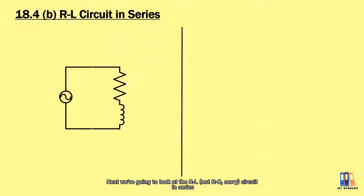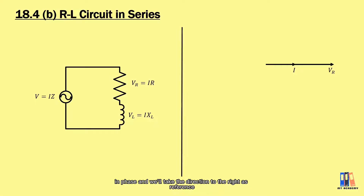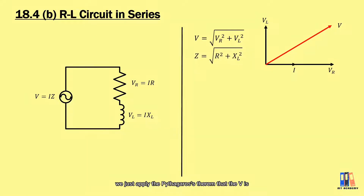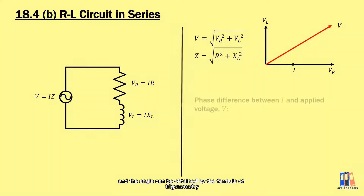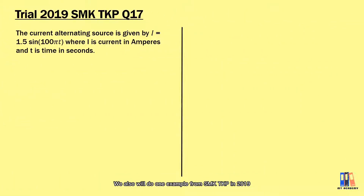Next we look at the RL circuit in series. The current and the voltage across the resistor are in phase, taking the rightward direction as the reference. The voltage across the inductor is leading the current by 90 degrees in the clockwise direction. To obtain the applied voltage, we apply the Pythagorean theorem: V = √(VR² + VL²). As for the impedance, Z = √(R² + XL²). The phase difference shows that the applied voltage is leading the current, and the angle is the inverse tangent of VL/VR, or equivalently the inverse tangent of XL/R.